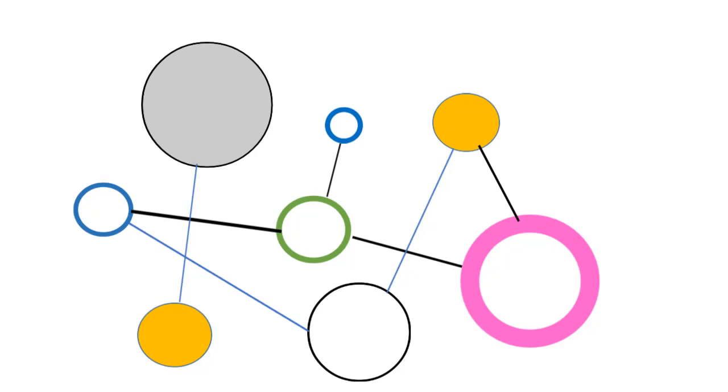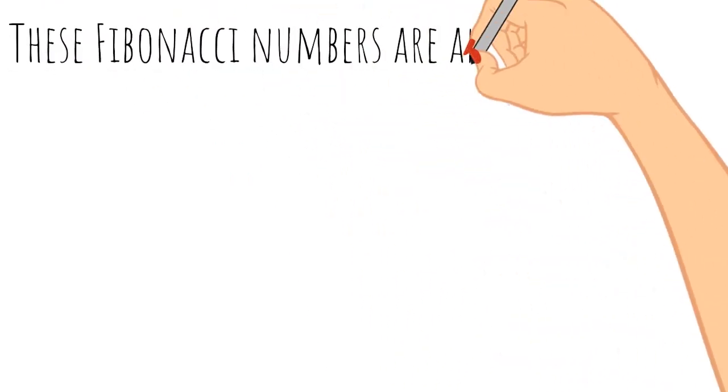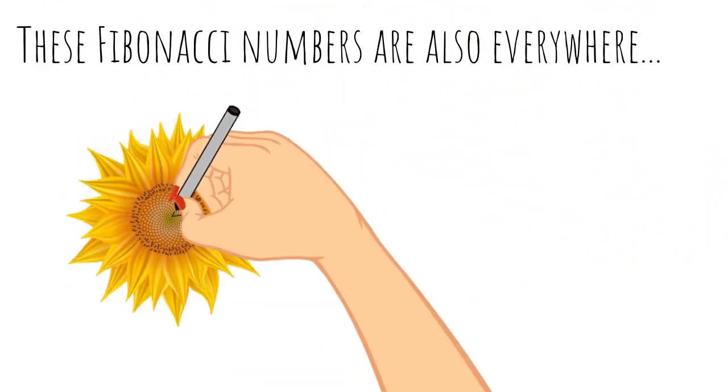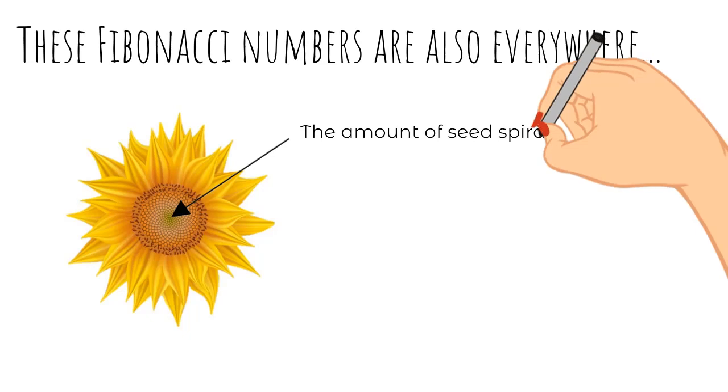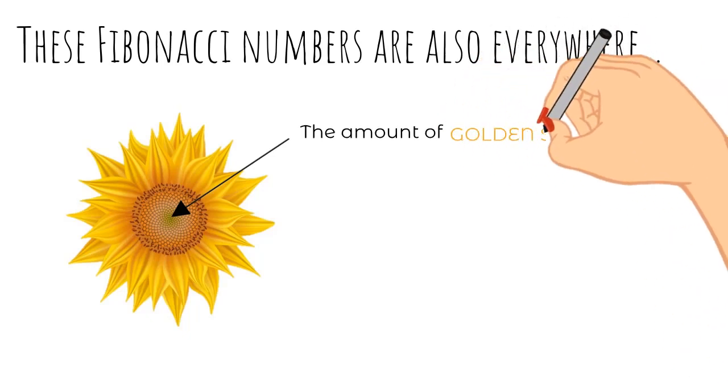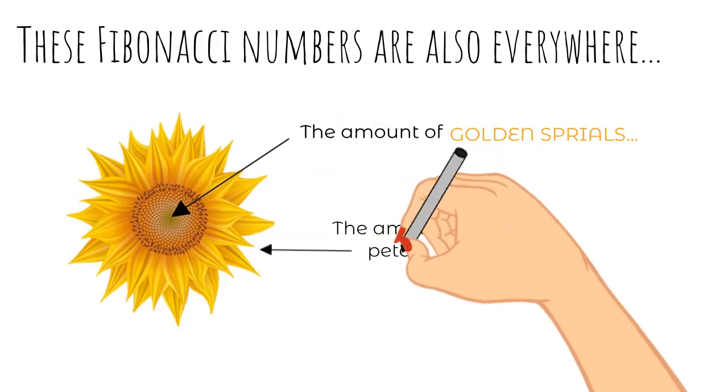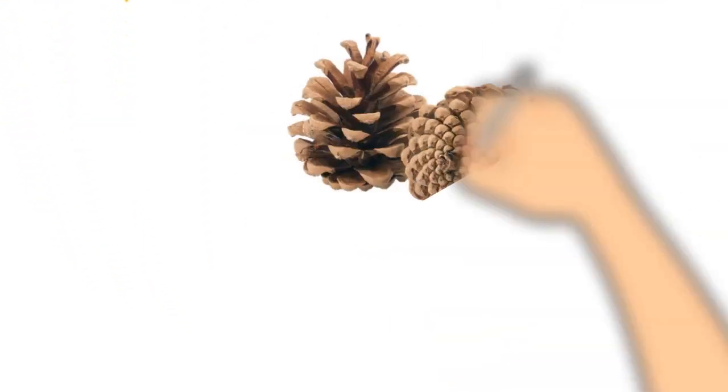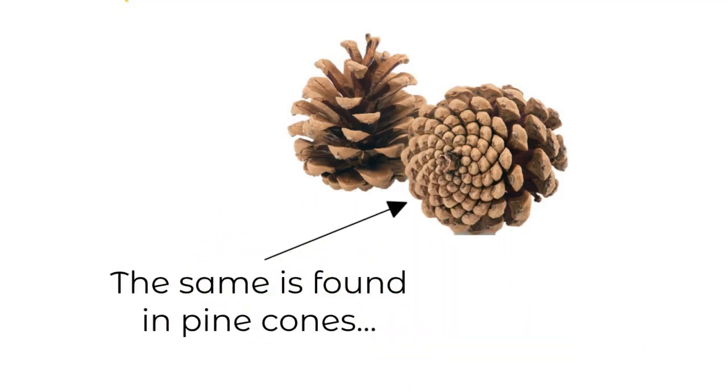Because just like our golden spiral and golden ratio, these Fibonacci numbers are also everywhere. For example, the amount of seed spirals in a sunflower, or should I say golden spirals in a sunflower, are Fibonacci numbers. It's true of the amount of petals too. And the same is found in pine cones as well as most natural life.